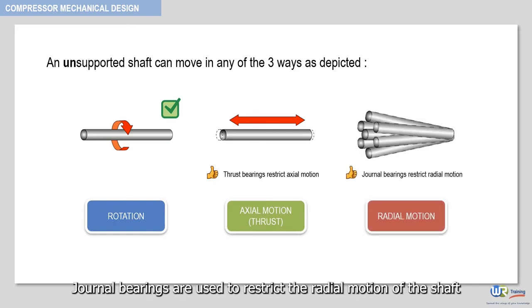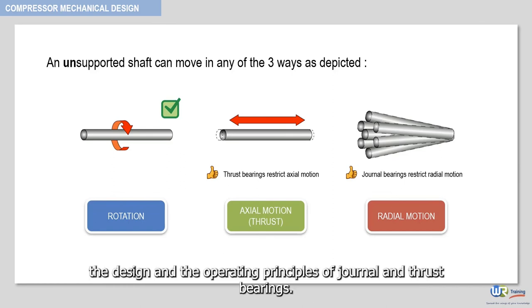Journal bearings are used to restrict the radial motion of the shaft while allowing it to rotate with minimum friction. In the next couple of videos, we will cover the type, the design, and the operating principles of journal and thrust bearings.